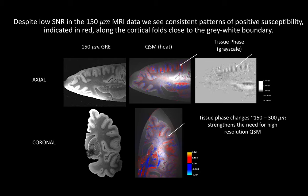The same pattern is visible in the tissue phase map of the axial slice. In the tissue phase it also becomes clear that changes in phase are on the order of 150 to 300 microns, further strengthening the need for such high-resolution analysis of QSM using ex vivo MRI.